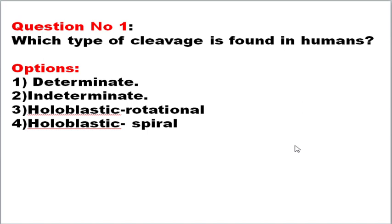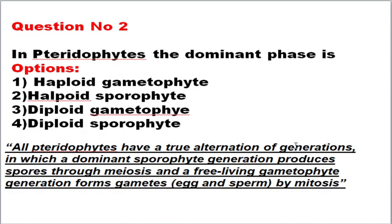You can also verify PubMed articles. The next question is with respect to plant physiology: in pteridophytes, the dominant phase is what? The correct answer is diploid sporophyte. With respect to pteridophytes, they have an alternation of generation, and pteridophytes generally follow a haplodiplontic cycle. If you studied from the Pathfinder book, you can definitely clear this.